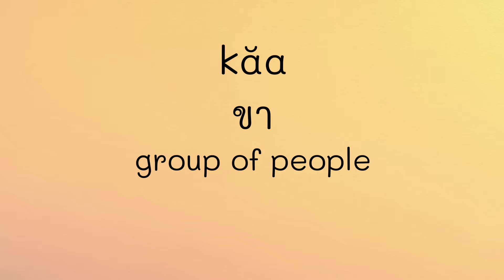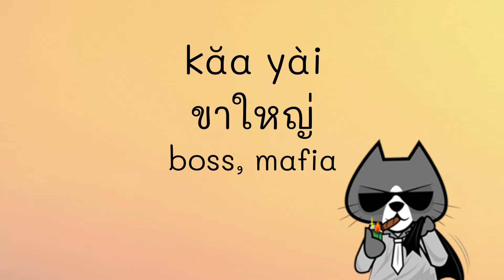In other contexts, ขา can denote a group, member, or function of people. For instance, ขาใหญ่ — where ใหญ่ means big — ขาใหญ่ literally means big leg. It is a slang term for someone in a position of authority, like a boss or a mafia leader. So we refer to them as ขาใหญ่.